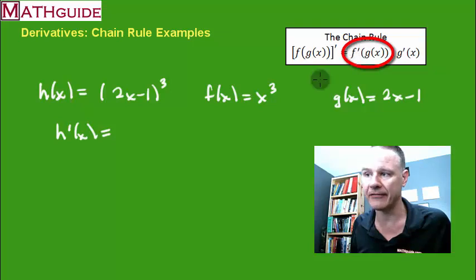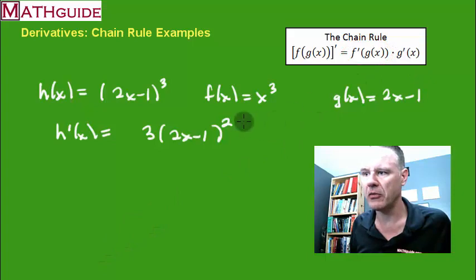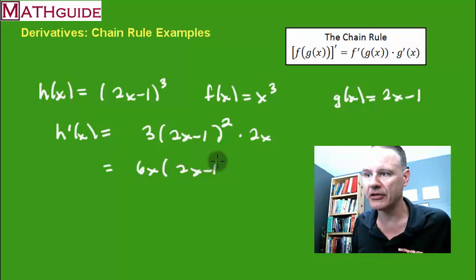First find the derivative of f. The derivative is 3x squared, but you leave the g of x inside the function. So the g of x is 2x minus 1. Then you multiply it by g prime of x. The derivative of this would be 2. Now if I multiply, I'm going to get 6 times (2x minus 1) squared.